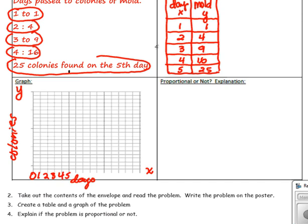And then the y-axis is the colonies of mold. So we have one, two, three, four, five, six, seven, eight, nine, ten.